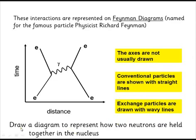To draw two neutrons being held together in the nucleus, we need to go through the same thinking process. Two neutrons are held together by the strong nuclear force. They must be drifting apart, and the strong nuclear force is going to pull them back together.